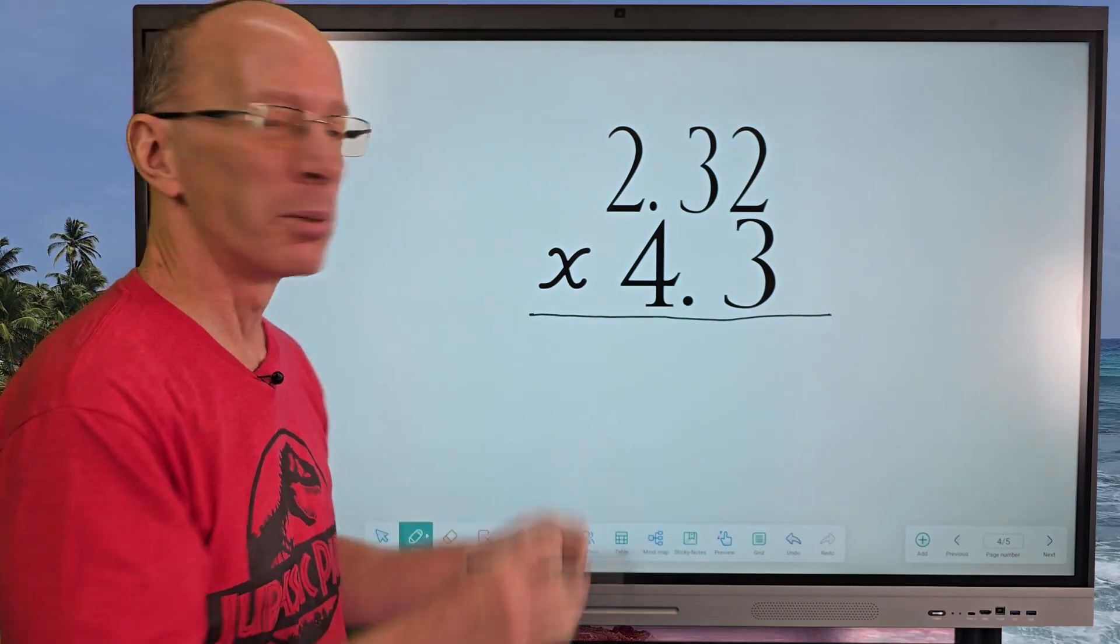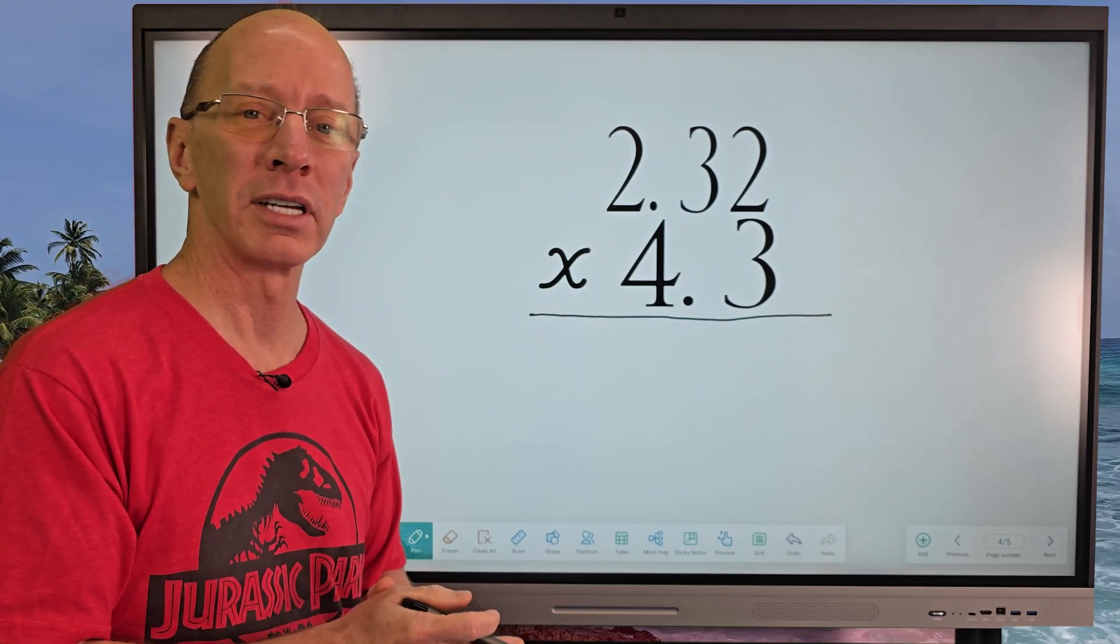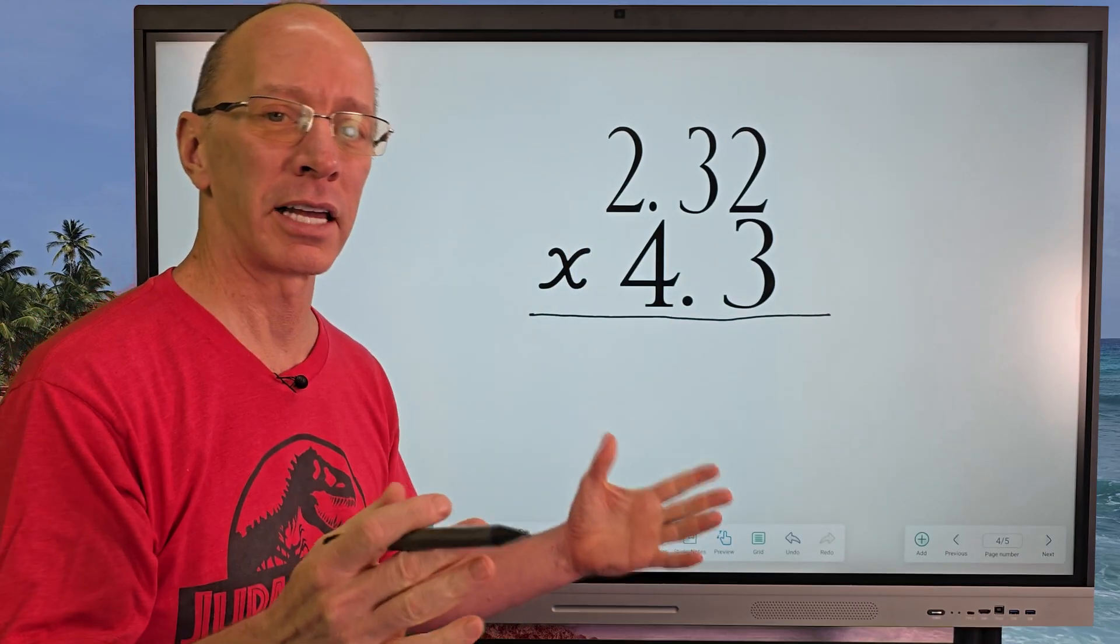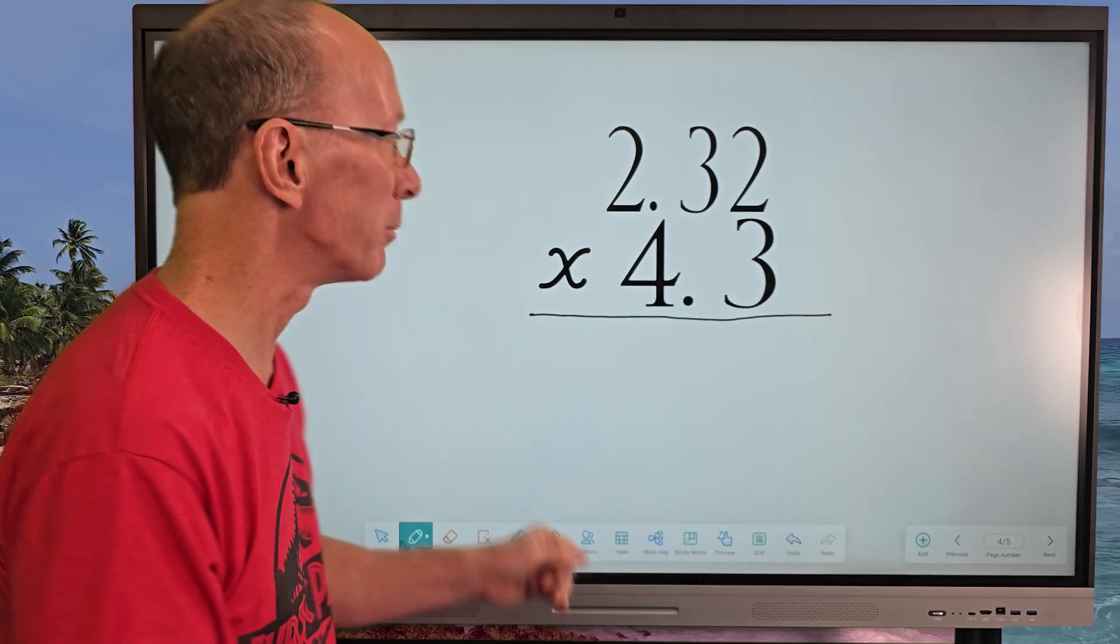Made some room on the board here. Let's go ahead and begin. When you multiply a number with a decimal, just go ahead and multiply like you usually would, and we're going to do the decimals at the end. Let me go ahead and show you.